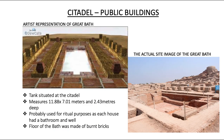In the citadel, the two most important public buildings found include the Great Bath. The figure on the right shows the actual site image of the Great Bath, and on the left is the artist's representation. This was a rectangular tank surrounded by a corridor on all four sides. Two flights of steps on the north and south led to the tank. It was made watertight by setting bricks on edge and using a mortar of gypsum. There were rooms on three sides, and on one side there was a large well.